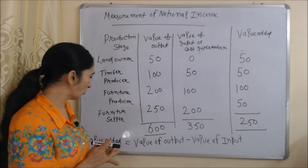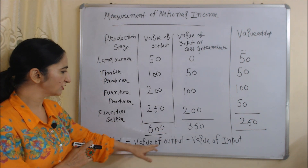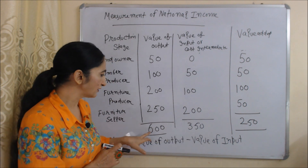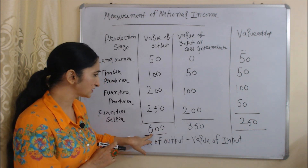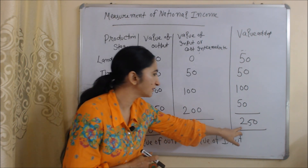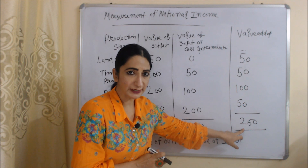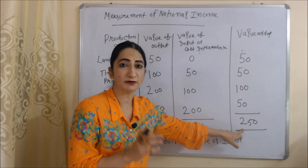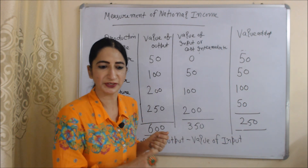Total value of output is 600 and total value of input is 350. Using the formula — value of output minus value of input — 600 minus 350 equals 250. So 250 rupees is the total value added by each producing unit.